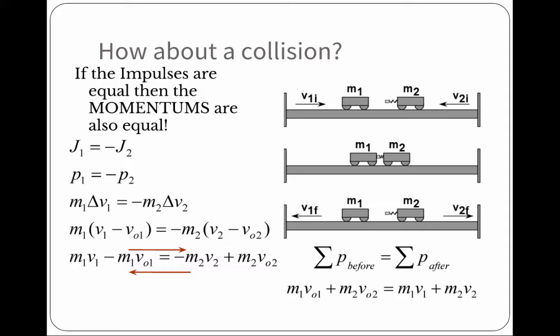If the momentums are equal, the mass times the velocity of the first object has to equal the mass times the change in velocity of the second object. So, notice that the equations we are getting are leading us to the sum of the momentum before is equal to the sum of the momentum after.